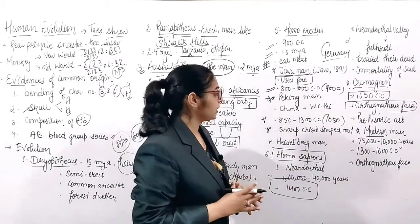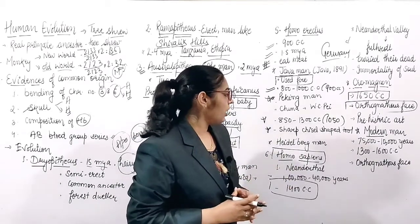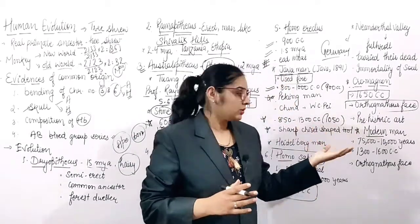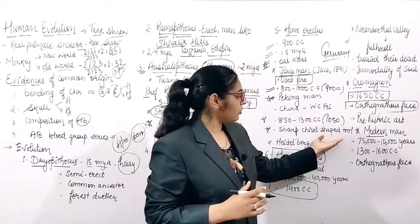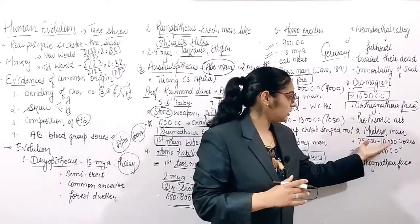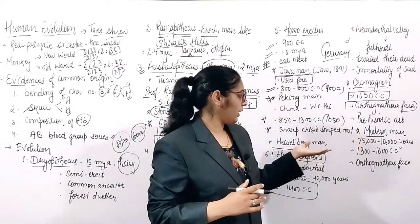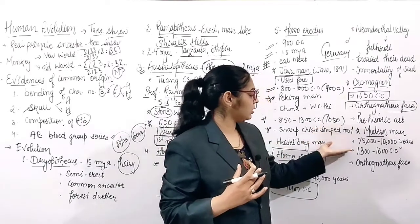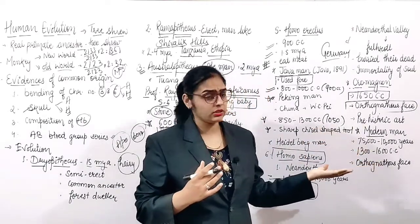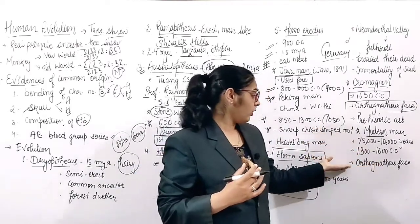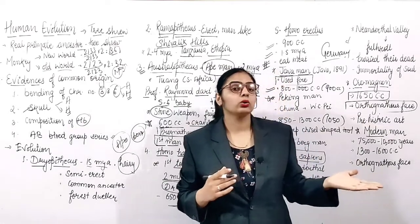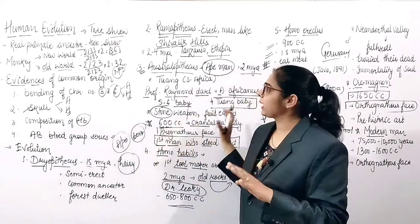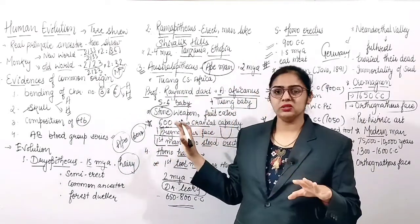The last is Modern Man. Their fossils are from around 75,000 to 10,000 years ago. Their cranial capacity is around 1300 to 1600 cc, and their face is orthognathous.